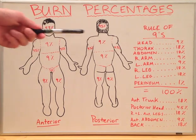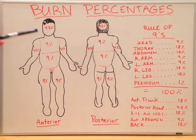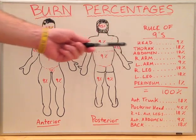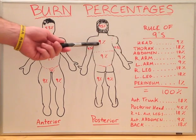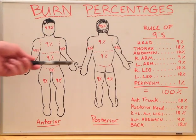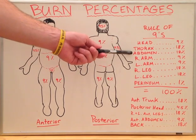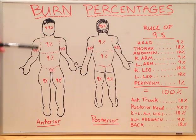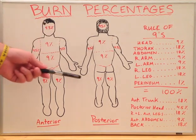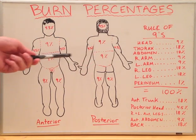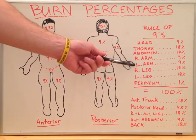Looking at the totals: the head in total is 4.5 plus 4.5, which equals 9. The thorax is 9 and 9, making 18. The abdomen is 9 and 9, making 18. The right arm in total is 4.5 on the anterior side and 4.5 on the posterior side, giving 9%. The left arm is the same — 4.5 and 4.5 gives 9.